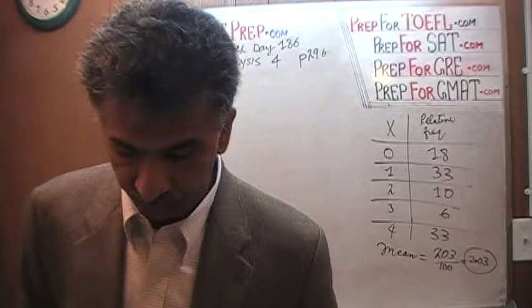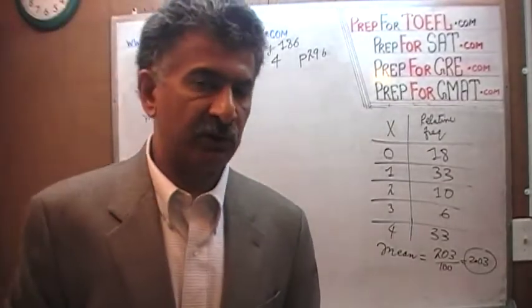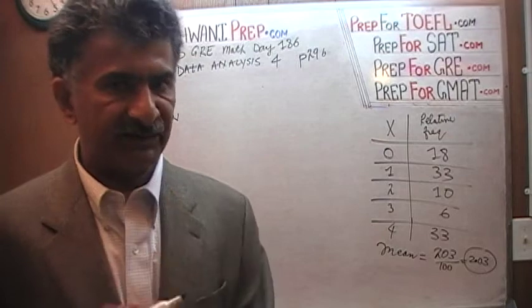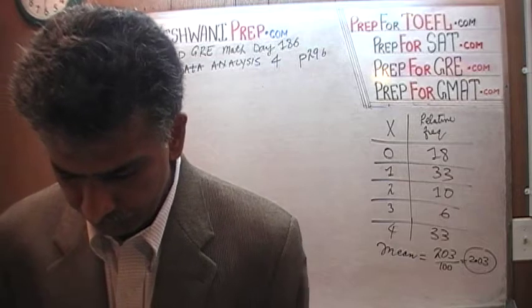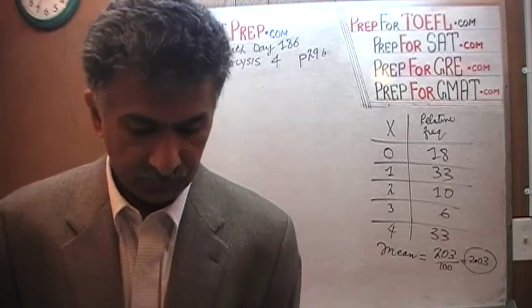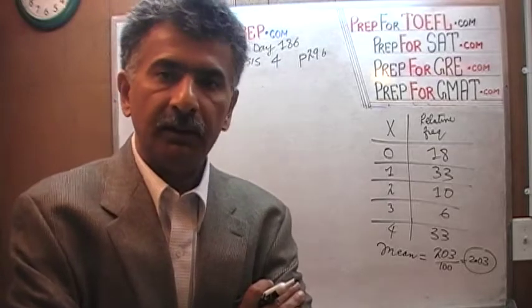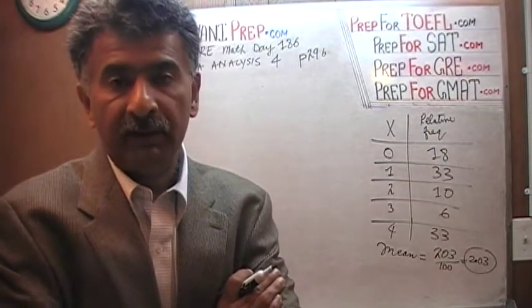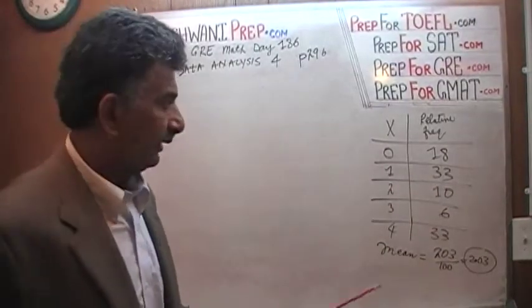The median is the middle observation, so the very first thing we have to do is figure out how many observations there are. Actually, we don't have to, because this is a relative frequency table, not an absolute frequency table — we did that yesterday with the problem from page 263. In a relative frequency table, the frequencies have to add up to 100.